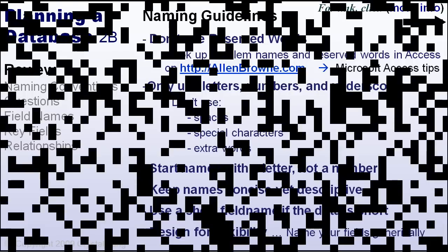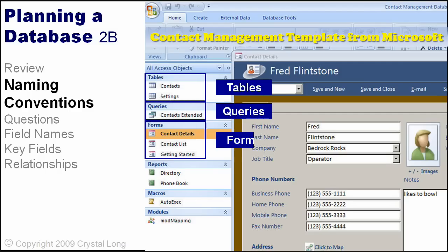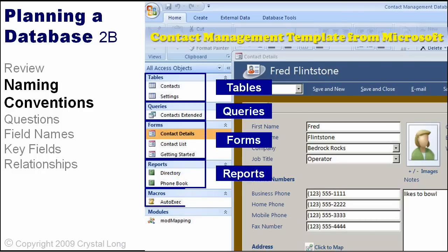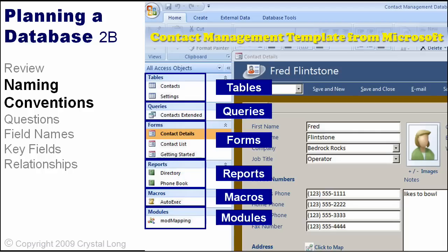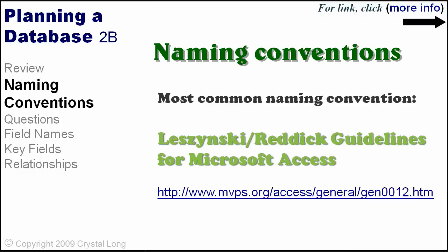A discussion about naming would not be complete without mentioning standard guidelines. We have mainly discussed tables because that is where you need to start. Access has tables, queries, forms, reports, macros, and modules. As we get further in our lessons, we will be covering each in detail. For now, realize they exist and there are conventions for naming them.